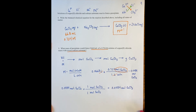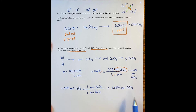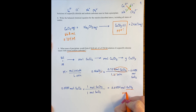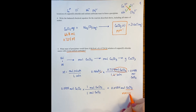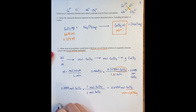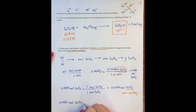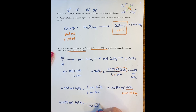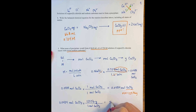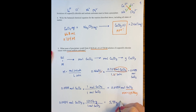Finally, the question asks for the mass of the precipitate, so the last step is to convert from moles of copper 2 carbonate to grams. We need to calculate the molar mass of copper 2 carbonate, which is 123.56 grams per mole. Taking 0.0484 moles of copper 2 carbonate times 123.56 grams per mole, our final answer is 5.98 grams of copper 2 carbonate.